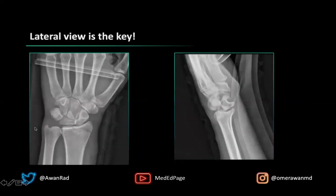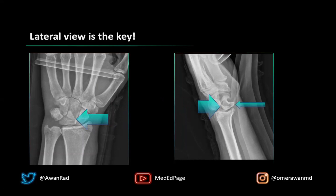The lateral view is key because we have this pie-shaped lunate on the frontal view, but the lateral is what gives this away. The lunate should be sitting right on top of the radius, but it has actually been dislocated 90 degrees anteriorly or volarly — toward the palmar aspect of the wrist. This is diagnostic of a lunate dislocation.